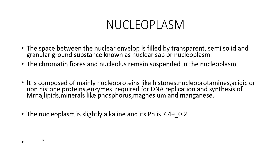The space between the nuclear envelope is filled by transparent, semi-solid and granular ground substance known as nuclear sap or nucleoplasm. The chromatin fibers and the nucleolus remain suspended in the nucleoplasm. The nucleoplasm has a complex chemical composition.